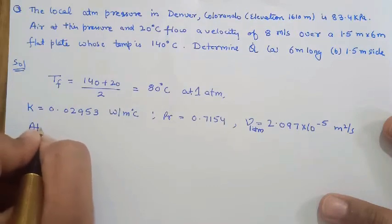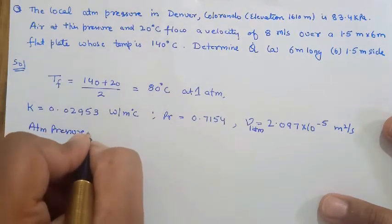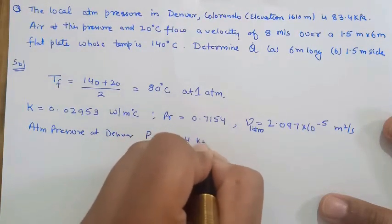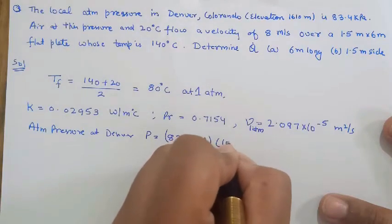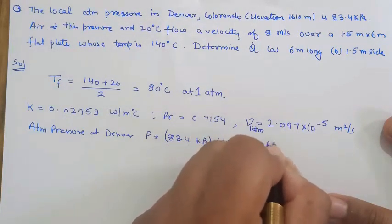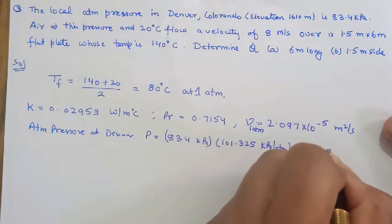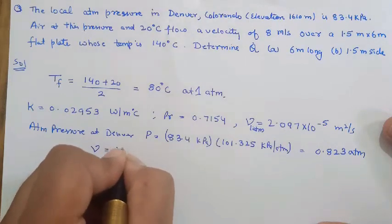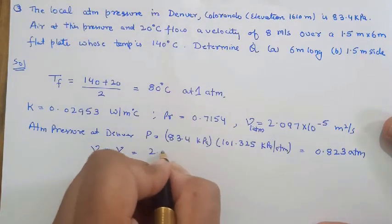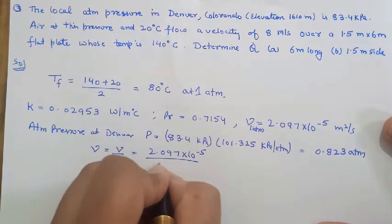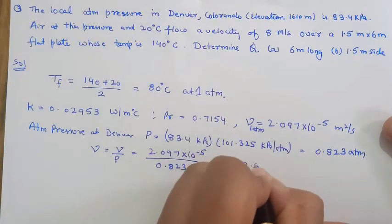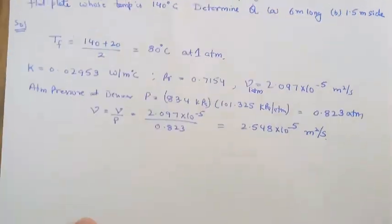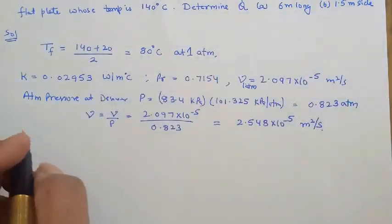The atmospheric pressure at Denver is 83.4 kilopascal, which equals 0.823 atmospheres. Since kinematic viscosity varies with pressure, the adjusted kinematic viscosity is 0.097 times 10 to the power minus 5 divided by 0.823, giving 2.548 times 10 to the power minus 5 meter square per second at Denver's pressure.